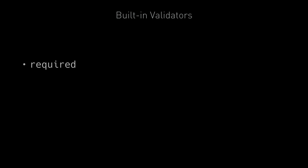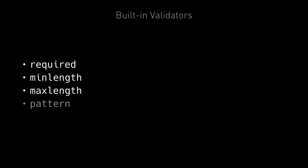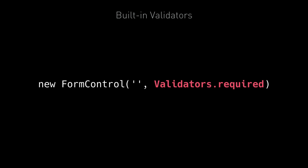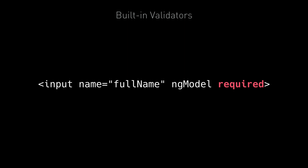We have a few built-in validators in Angular: required, min-length, max-length, and the pattern validator. We can use these validators in two ways. The first way is as functions that we pass into the form control constructor in model-driven forms. The code here creates a form control with a required validator function attached. The second way is as directives in template-driven forms.